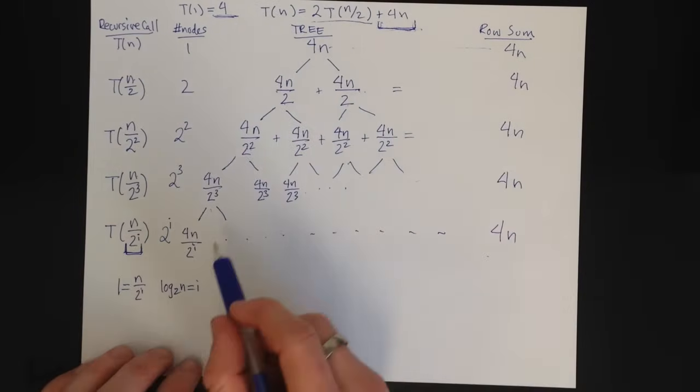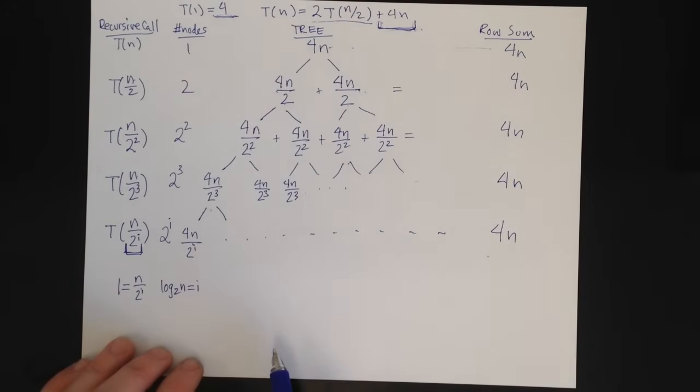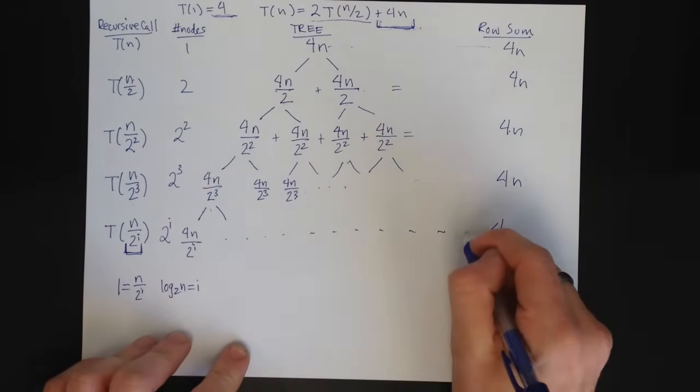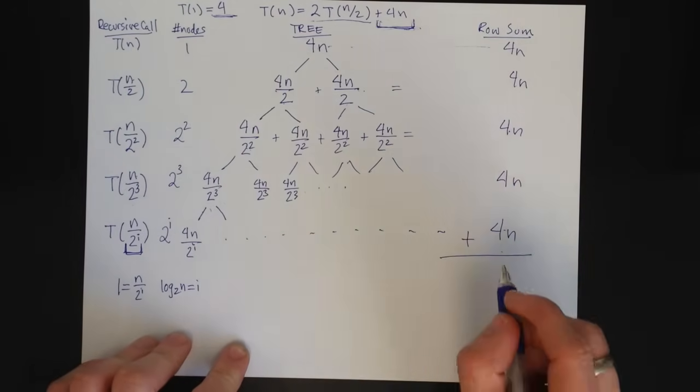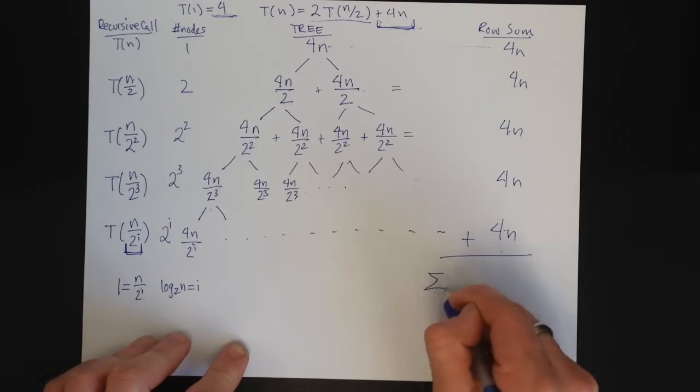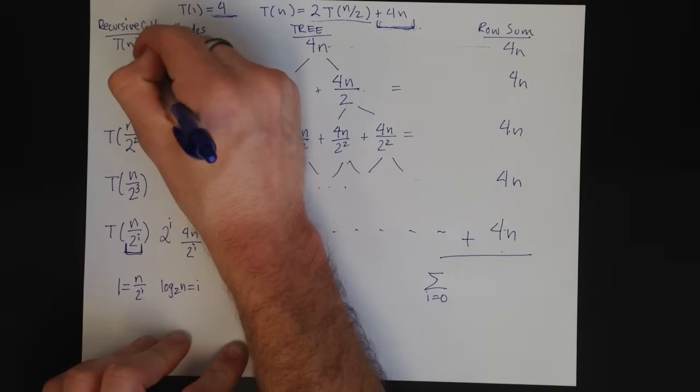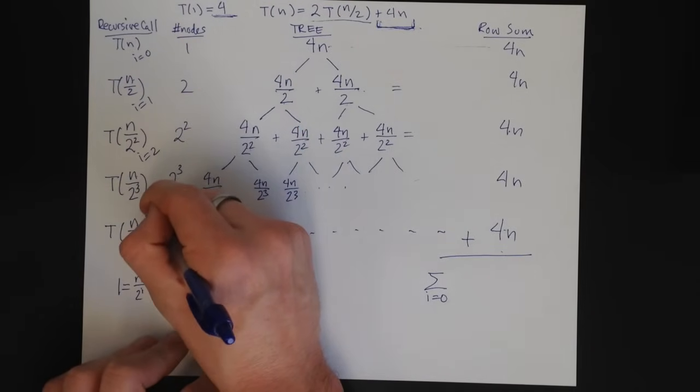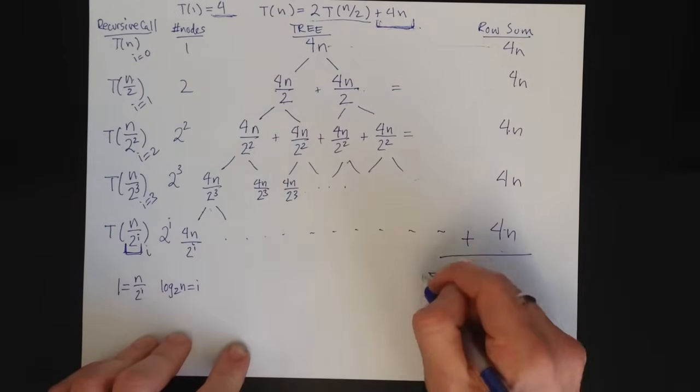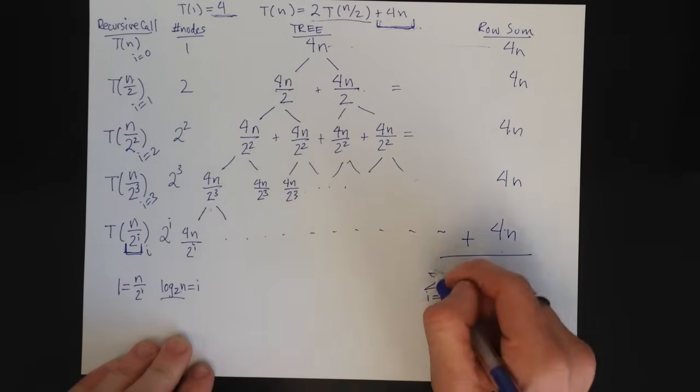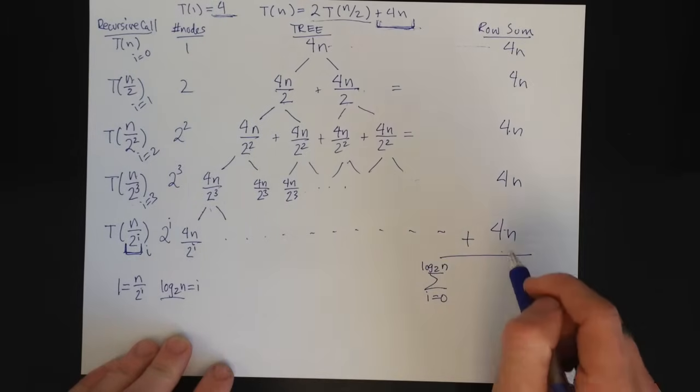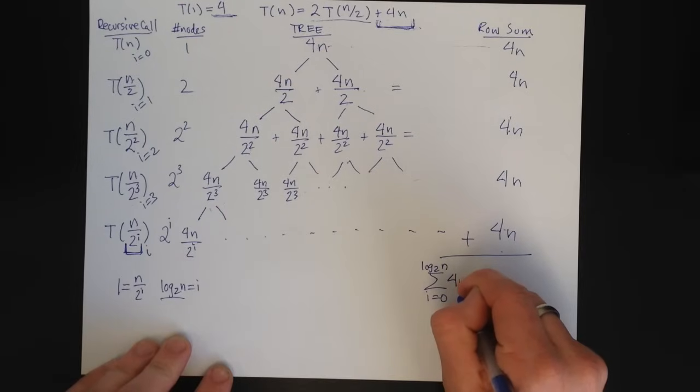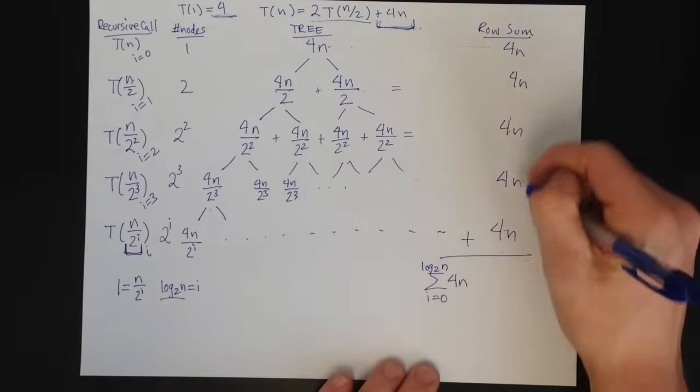And so now I know how many levels I'm doing. I know what the sum is for each level. And so I need to write this as a sum over this whole thing. And what is this sum? This sum is from i equals 0, this is the i equals 0 level, i equals 1, equals 2, i equals 3, this is the general i level, to, and now I know when I stop, log base 2 of n of what each one of these is. So in this case, it's pretty easy. It's just 4n. This isn't in terms of i. So we can pull the 4n out.